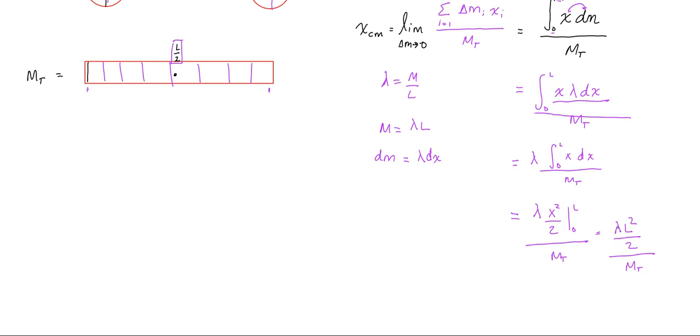Let's plug in what lambda equals: m over L. So I've got lambda L squared over 2m total, which is m over L times L squared over 2m total. Doing some simplifications, the m total and this m are the same thing because mass is density times length, so those factor out. One of the L's gets factored out, and I'm left with just L over 2 for the center of mass.